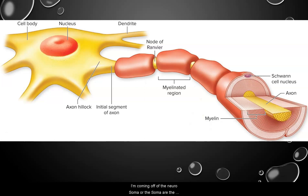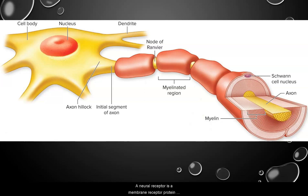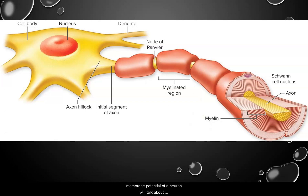Coming off of the neurosoma are the dendrites. The dendrites are the primary site for receiving signals from other neurons or from the environment — the more dendrites a neuron has, the more information it can receive. They provide precise pathways for reception and processing of information. A neuroreceptor is a membrane receptor protein found on the dendrites, activated through a neurotransmitter. The influx of ions through ion channels opened by neurotransmitter binding to specific receptors can change the membrane potential of a neuron.